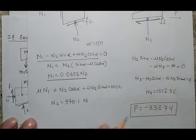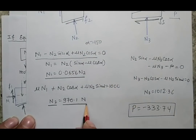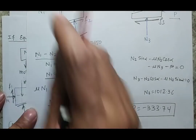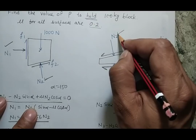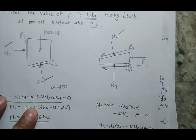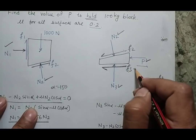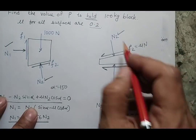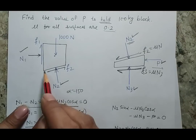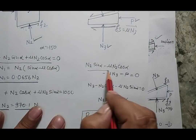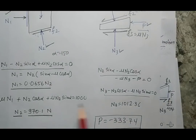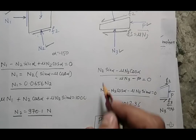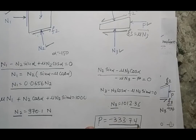When I balance the vertical forces for the larger body, I get N2 = 970.1 Newtons. After solving the larger body, I have the values of N2 and N1. Moving to the wedge body with N2 known, the two unknowns are P and N3 (since F3 = mu3 × N3). Writing the horizontal and vertical force balance equations and substituting N2, I get N3 = 1012.3 Newtons, and substituting into the other equation gives P = minus 333.74 Newtons.